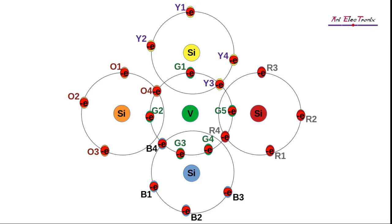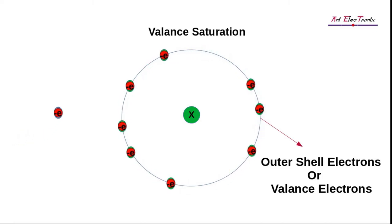Whenever we dope a silicon crystal with pentavalent atoms, the pentavalent atoms belong at the center, surrounded by the four silicon atoms. Hence, the valence orbit of the pentavalent central atom will consist of nine electrons. A central silicon atom will receive four extra electrons that are shared by its four neighbors. The maximum number of electrons occupying a valence orbit is eight, as we saw in our last video due to valence saturation.